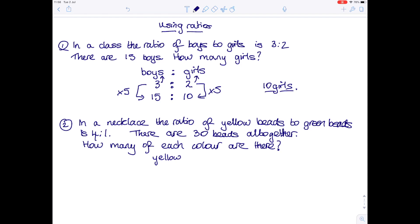We are dealing with yellow beads and green beads, so I'm going to write down the ratio in words to start off with. We are told the ratio of yellow to green is 4 to 1. That means for every four yellow beads there is one green bead.